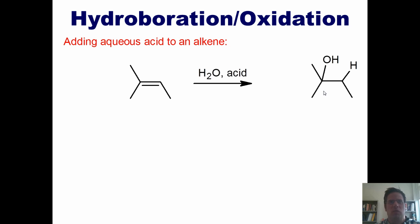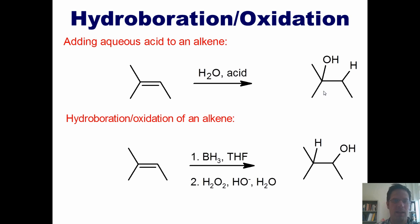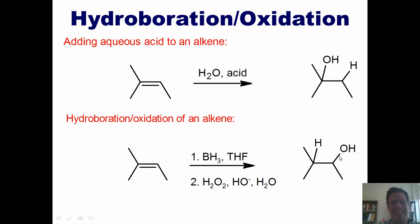Do I have to have magical fairies or elves come and place my OH where I want it? Well, as it turns out, the answer is no — there do exist conditions that can allow you to accomplish just that. You take the same alkene and treat it over two steps: BH3·THF in step one, and H2O2, hydroxide, and H2O in step two. H2O2, by the way, is called hydrogen peroxide. These conditions will place an OH in the anti-Markovnikov position.